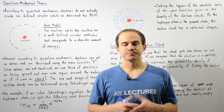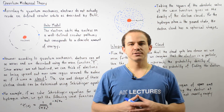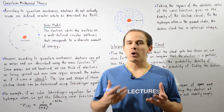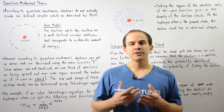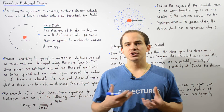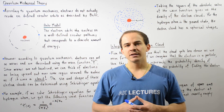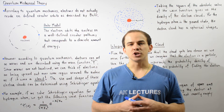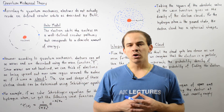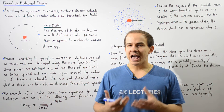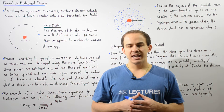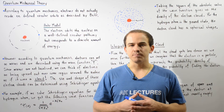In this lecture, we begin our discussion on the quantum mechanical theory of the atom. This is basically the theory that uses quantum mechanics to describe the structure of the atom. Let's begin by recalling an earlier model of the atom as described by Niels Bohr, known as the Bohr model.